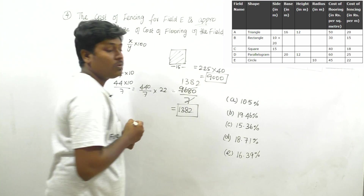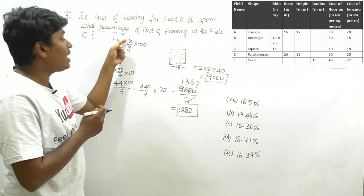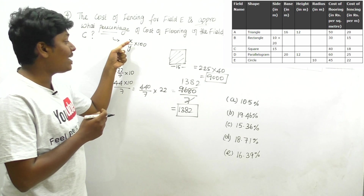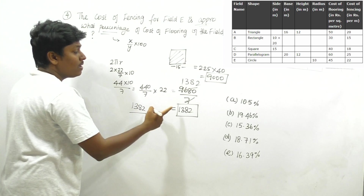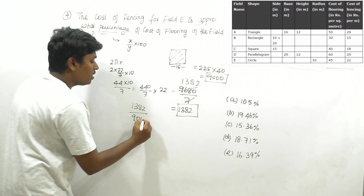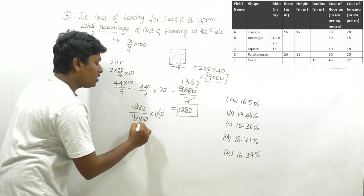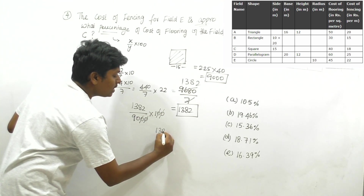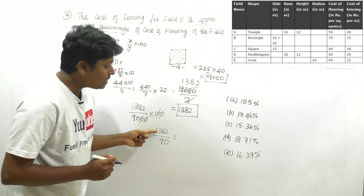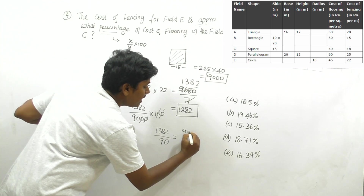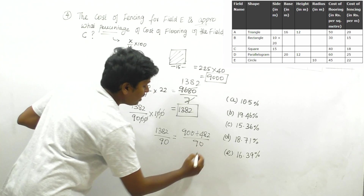Now find the cost of flooring for field C, which is a square with side = 15. Area = 15² = 225 square meters. Flooring cost = 40 rupees per square meter. So 225 × 40 = 9000 rupees.